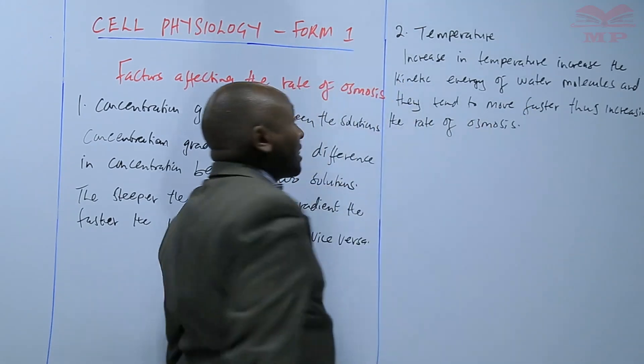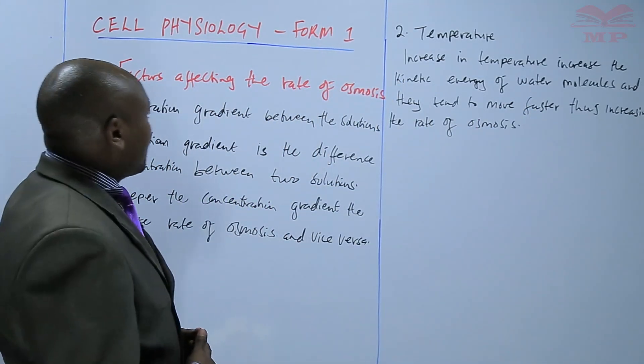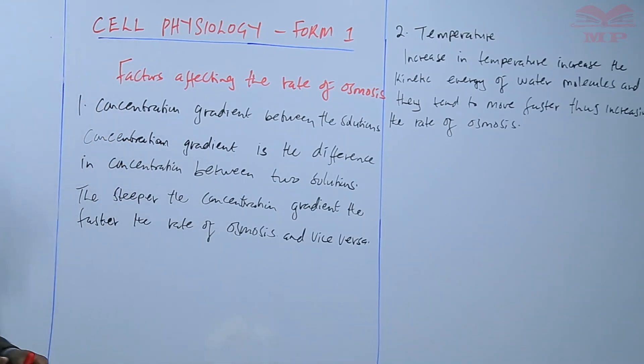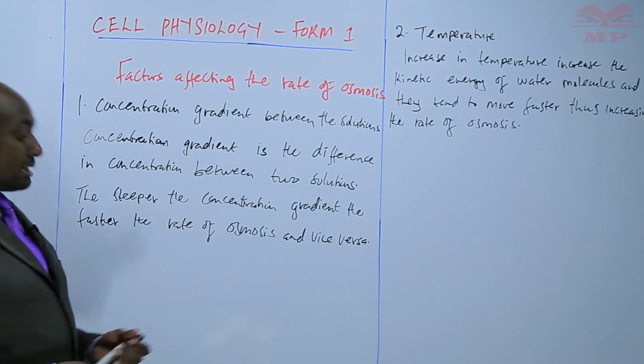increasing the rate of osmosis. So basically, those are the two main factors that affect the rate of osmosis. We have the concentration gradient and temperature.